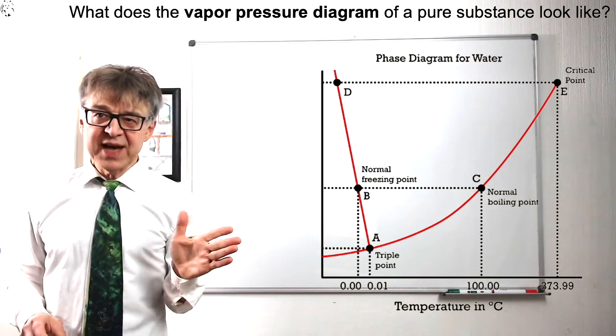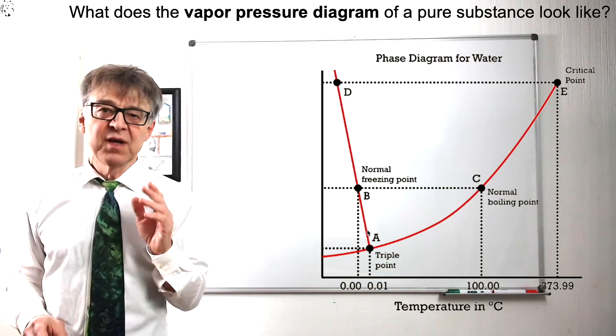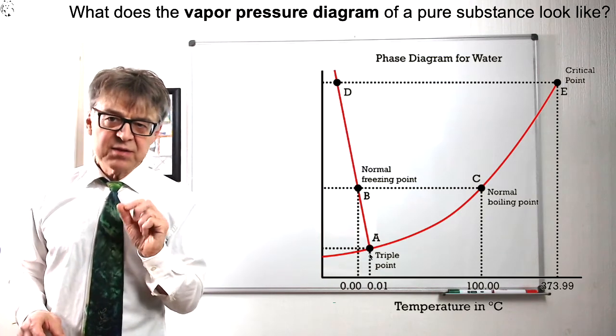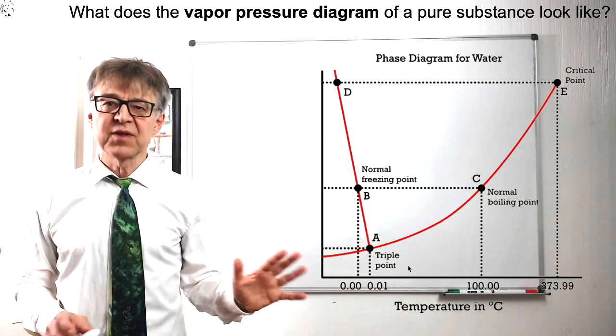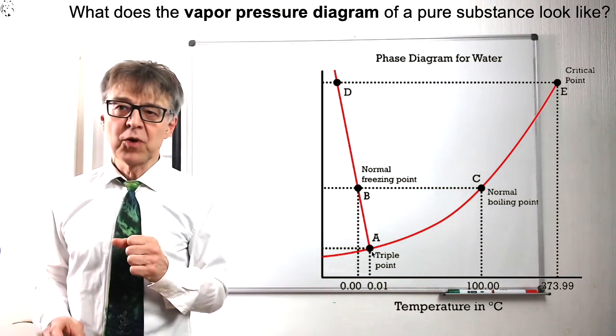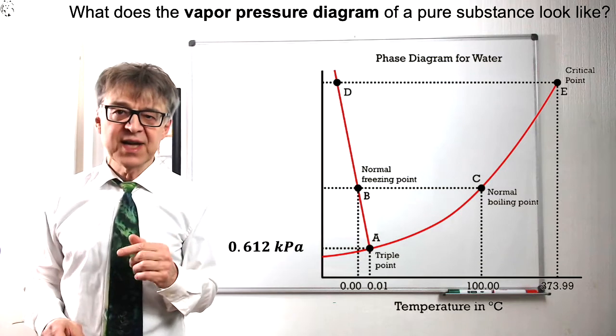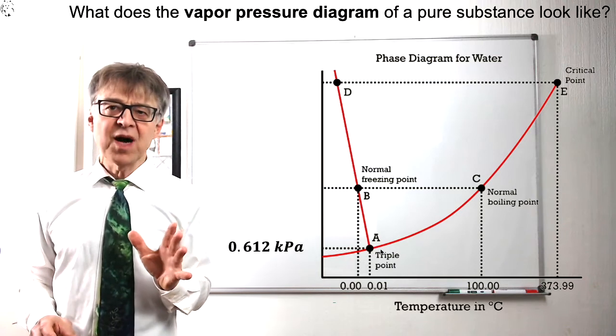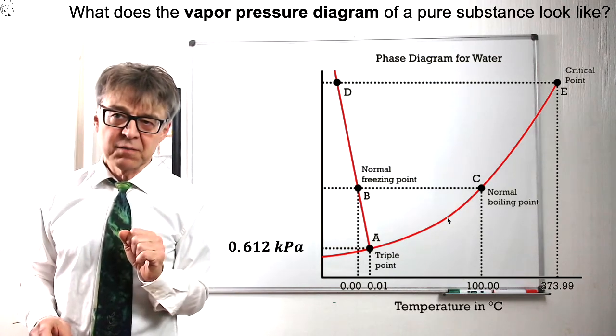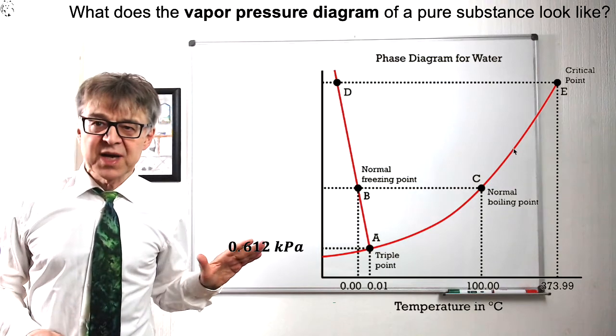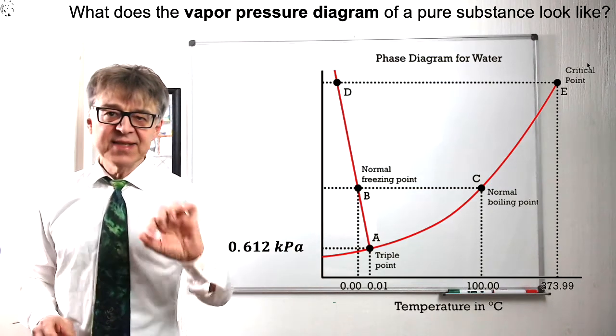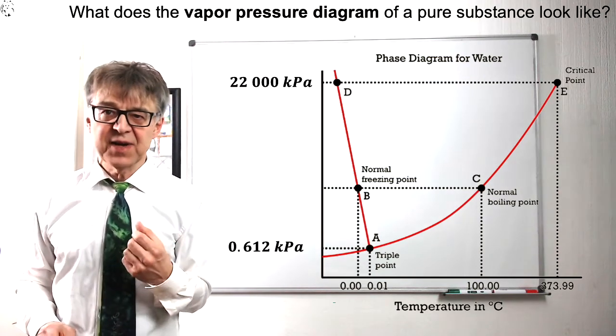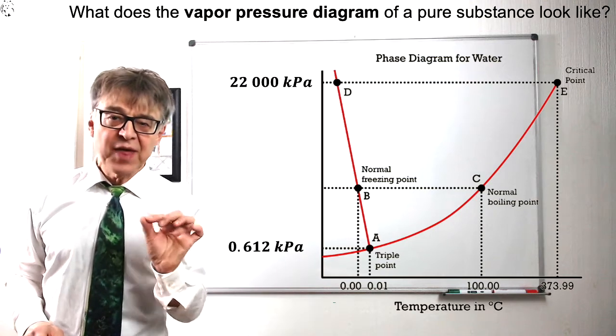We see three lines—that is the vapor pressure curve, the sublimation pressure curve, and the melting pressure curve. These three lines intersect at one point, the so-called triple point. The triple point for water is 0.01°C and 0.6 kPa. The triple point marks the beginning of the vapor pressure curve. The vapor pressure curve becomes steeper with increasing temperature and ends at the critical point. The critical point of water is 374°C and 22,000 kPa.